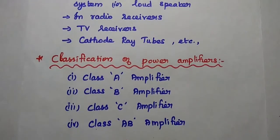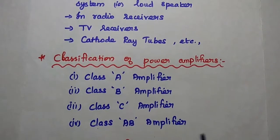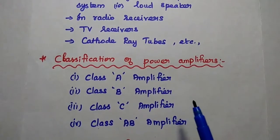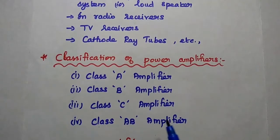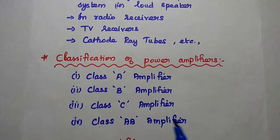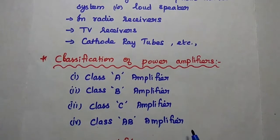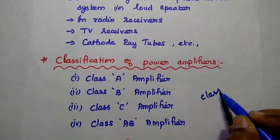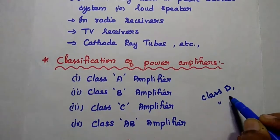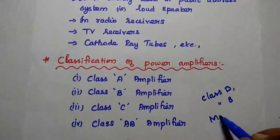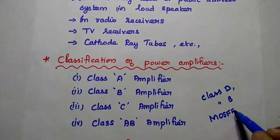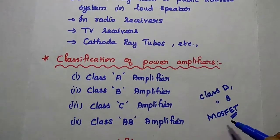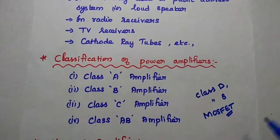Next, classification of power amplifiers. Power amplifiers can be classified into class A amplifier, class B amplifier, class C amplifier, and class AB amplifier. Apart from that, we can have class D and class S. We can also have MOSFET power amplifiers, which are based on the type of transistors used.